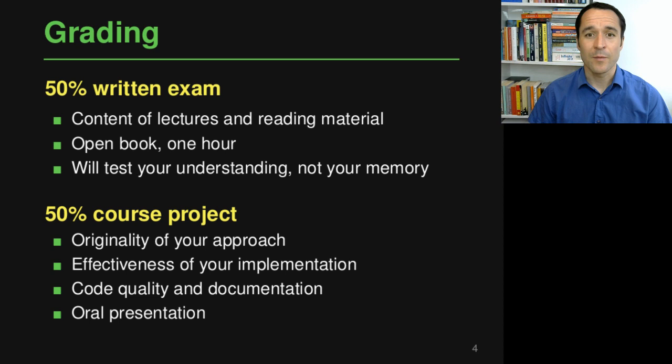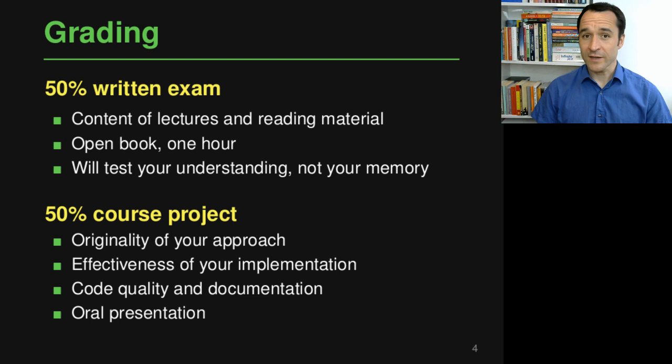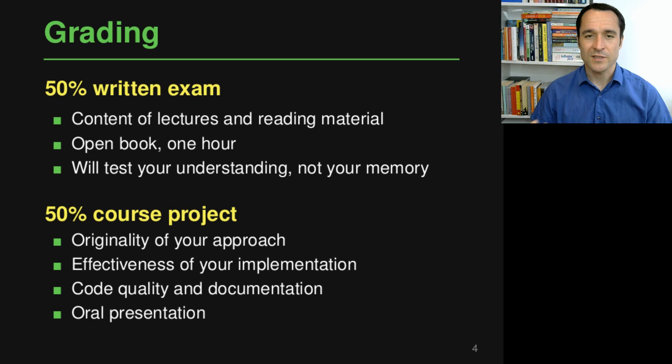The other half of the grade comes from the course project, and specifically we'll look at four things. One is the originality of your approach — have you come up with a creative solution to the problem. Second, how effective is your implementation — we will actually run your code on new examples you have not seen before and see how well it works. Third, we'll look at the quality of your code and things like documentation, basically whether your code is in a shape where someone else could continue working with it. And finally, there will be the oral presentation of the project, which is also part of the grade.